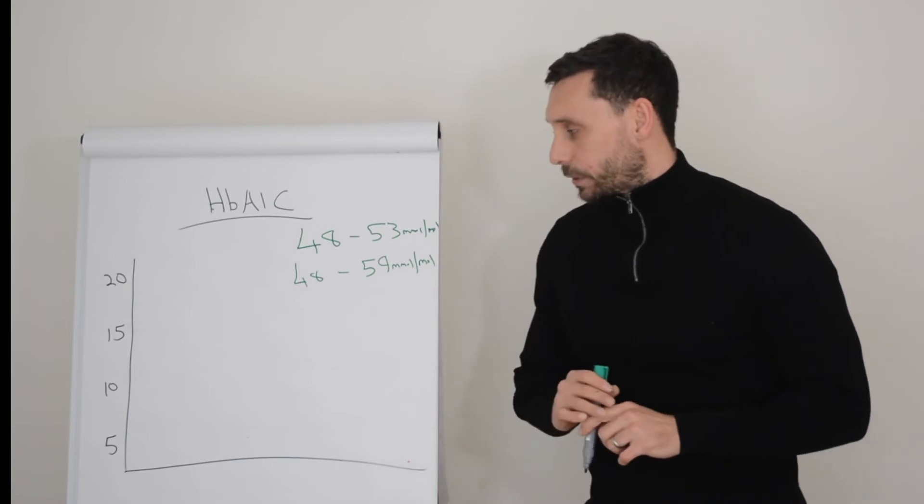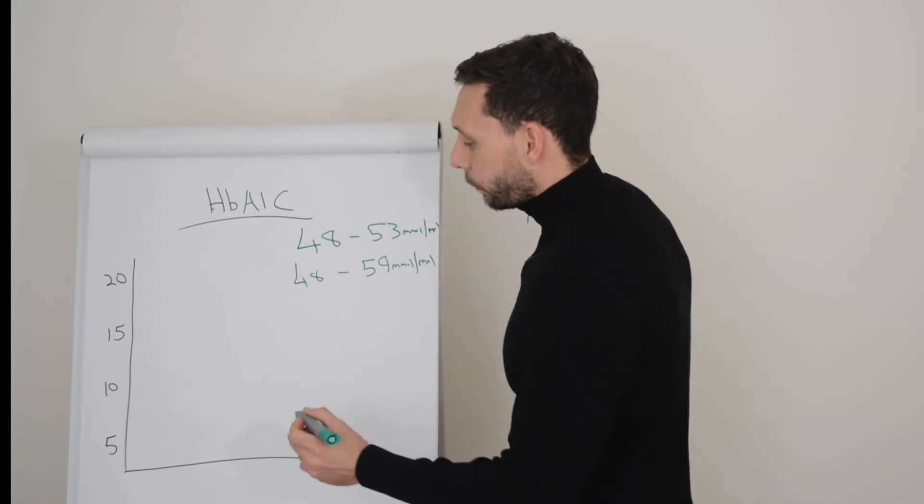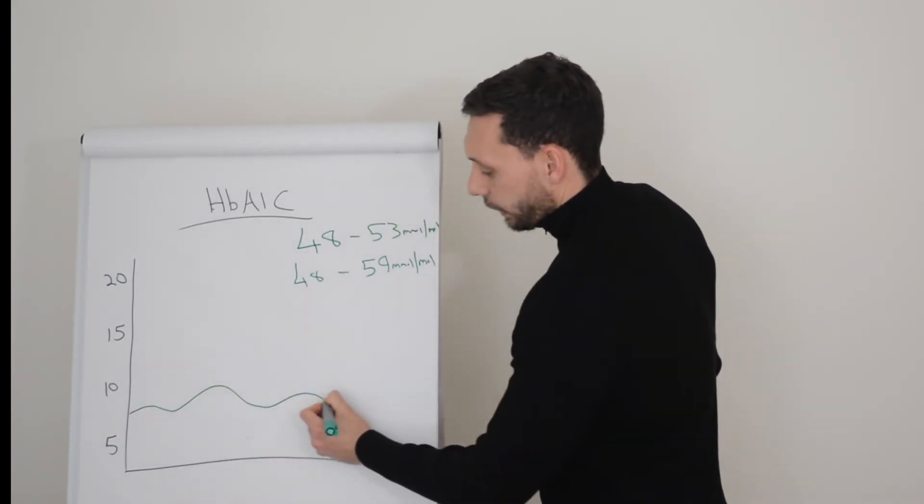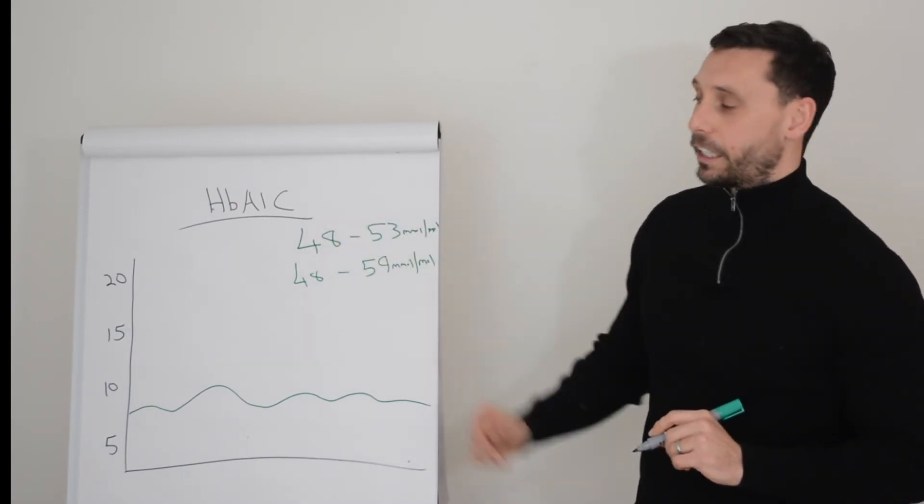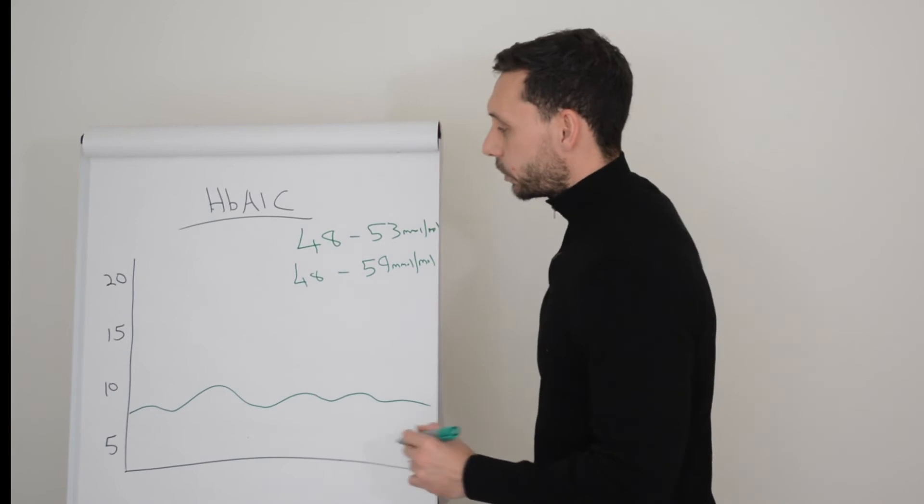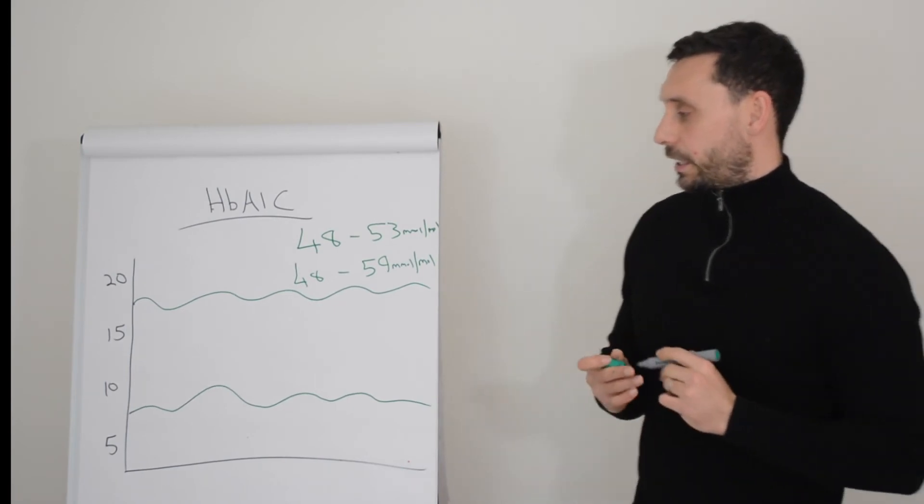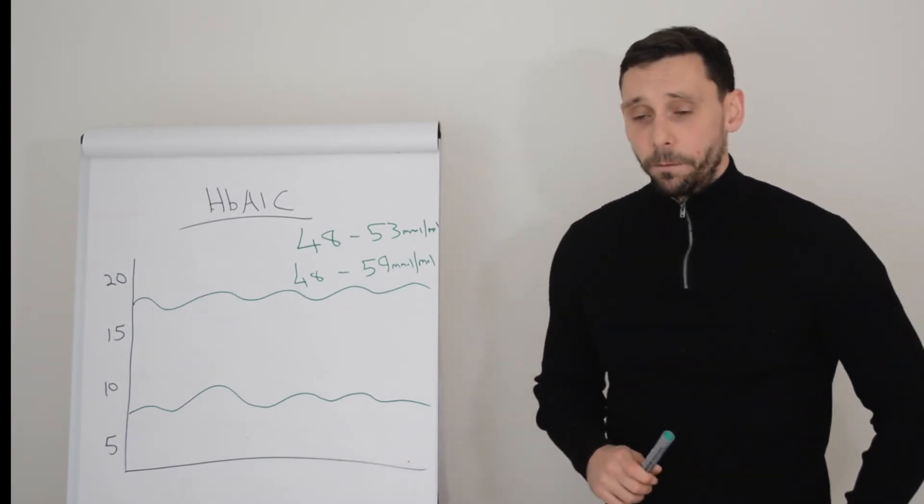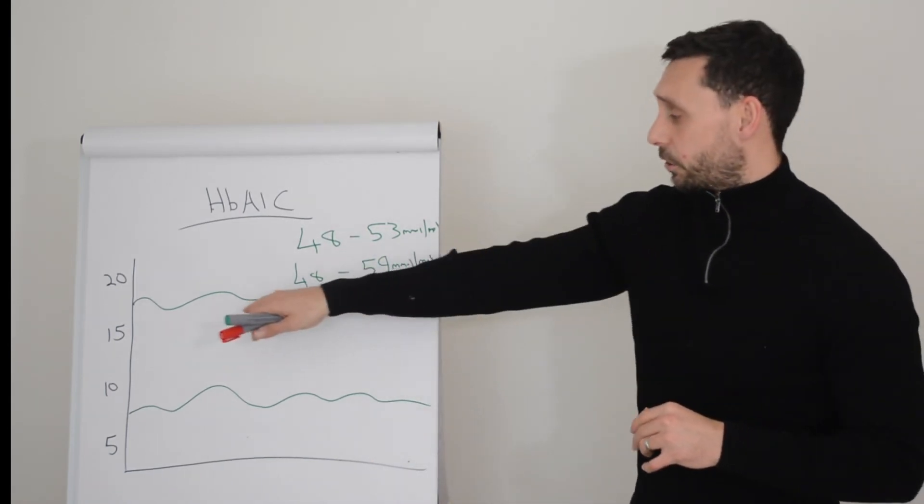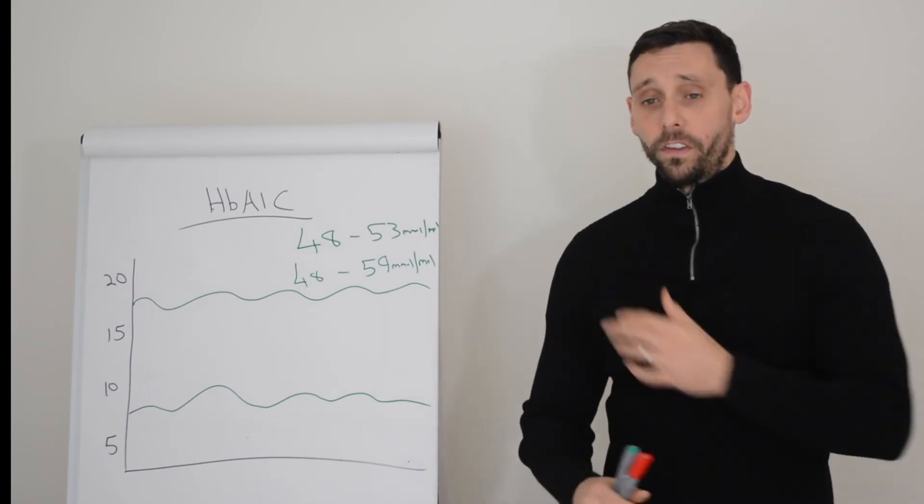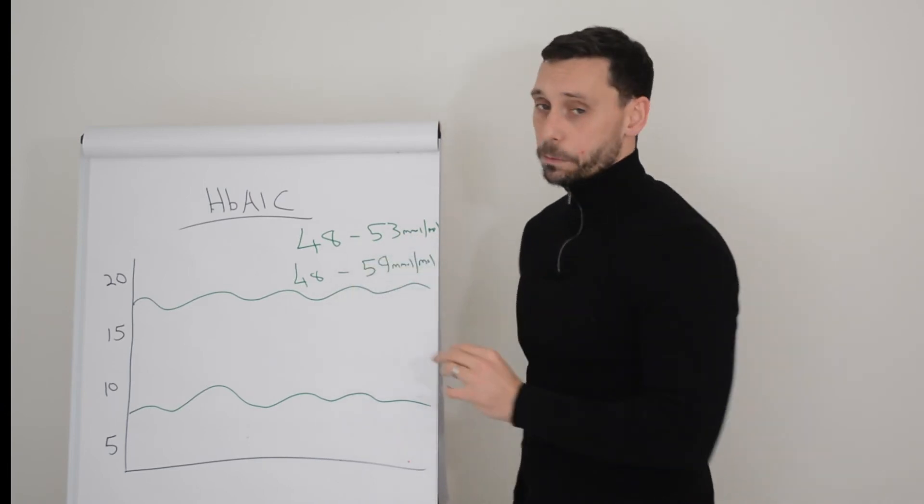Now a couple of the drawbacks with this is the HbA1c is obviously an average. Let's say you have two people. Someone is roughly floating in here most of the time between 5 and 10. The HbA1c is going to be pretty good; they're going to be in this target range. Meanwhile you have someone else and they are floating up here quite regularly between 15 and 20. Their HbA1c is going to be quite high, and that's quite clear. If we have access to their glucose data on a day-to-day basis, what they're seeing on the finger or the continuous glucose monitor or flash glucose monitor will correlate roughly with what the HbA1c is.